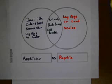Now let's talk about amphibians. Amphibians are dual-life animals — they spend a lot of time in the water and some time on the land. They have smooth skin and they lay their eggs in water. Think newts, salamanders, frogs, and toads.